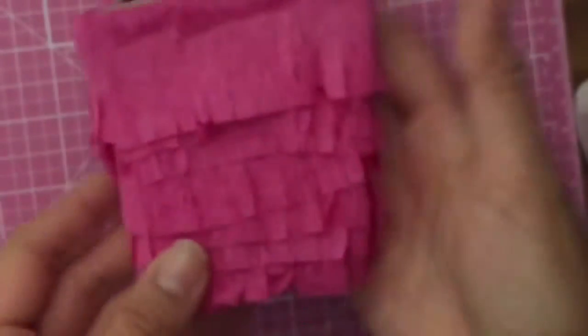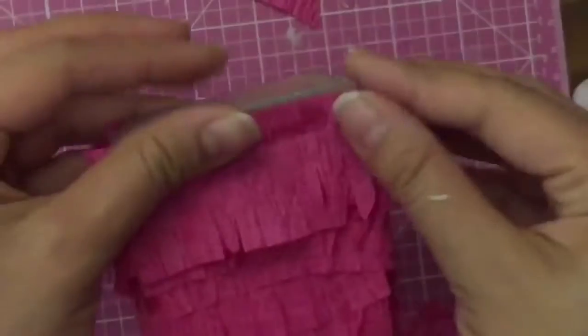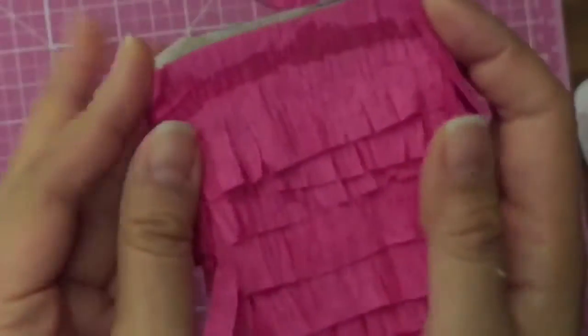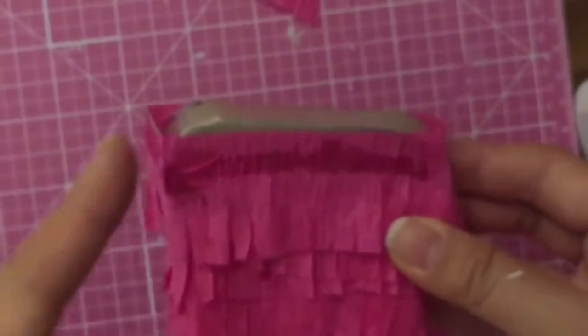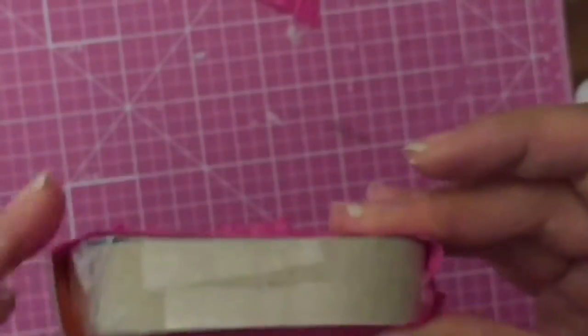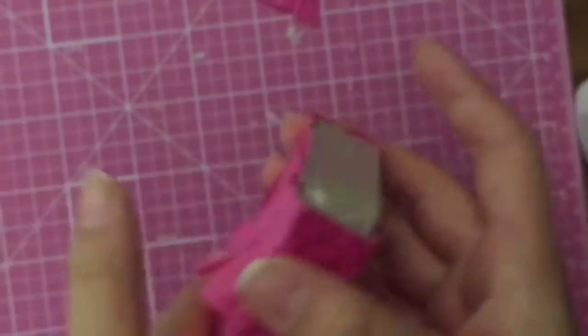So I covered my pinata all the way from the bottom to the top and if you're wondering what happened to the flap on the side, I just covered directly over that and I'm just going to snip through the crepe paper to open up the tab. Now you're also going to want to cover up the top. To do this, you're going to make double-sided fringe to cover the top.